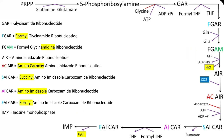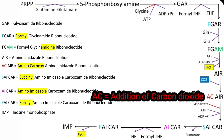In the next reaction, AIR is converted to ACAIR. ACAIR means Aminocarboxyl Aminoimidazole Ribonucleotide. To remember the enzyme and coenzyme participating in this reaction: AC equals addition of carbon dioxide. So in this step, carbon dioxide is added, and the enzyme catalyzing this reaction is Carboxylase.